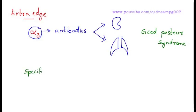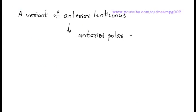The specific location of mutation in Alport syndrome is Xq22. A variant of anterior lenticonus called anterior polar cataract is seen in Alport-like syndrome.